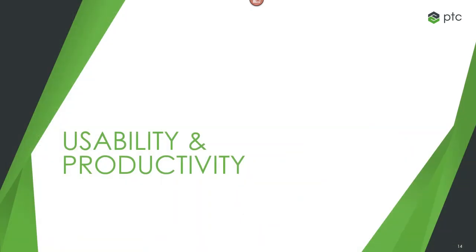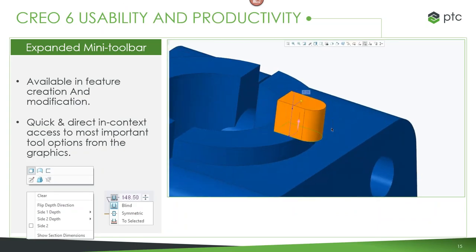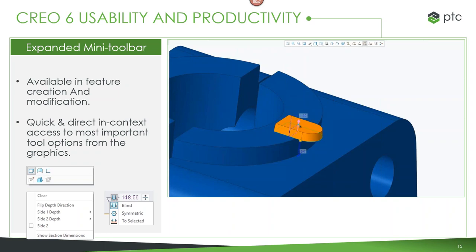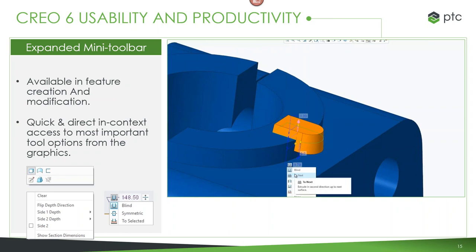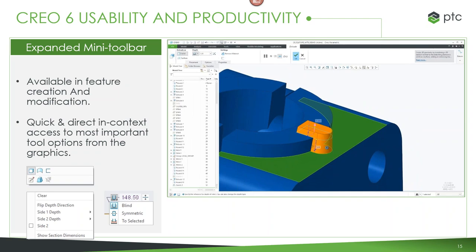Now, some general productivity enhancements — a wide-ranging set of changes. We've expanded the mini toolbar concept introduced in Creo 4 through Creo 5 and now in Creo 6. Anytime you select anything, you get this mini toolbar giving quick access to important design options. As they build out a feature in the demonstration, notice they're not going up to the ribbon at all — all the options are available right from that left-click mini toolbar. It's now in many more features with many more options available.